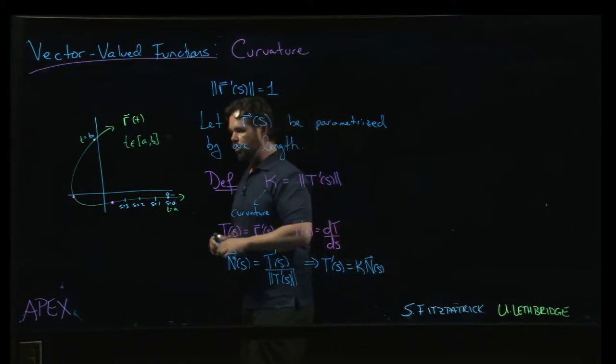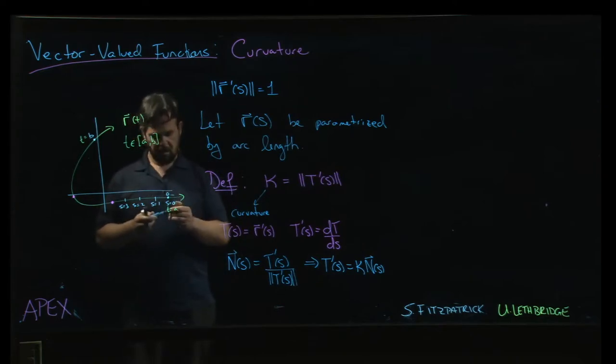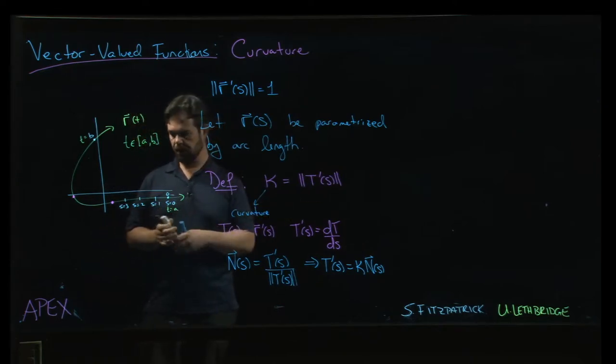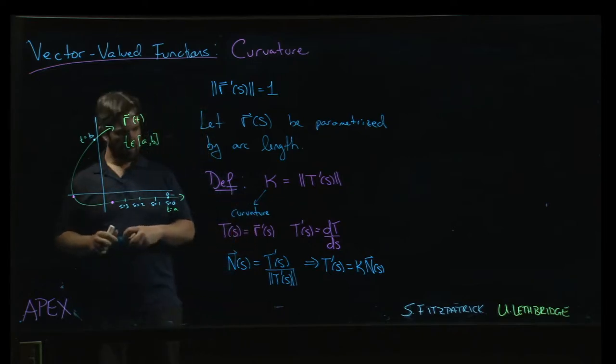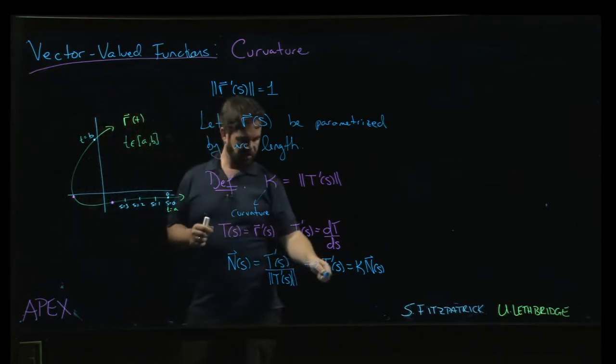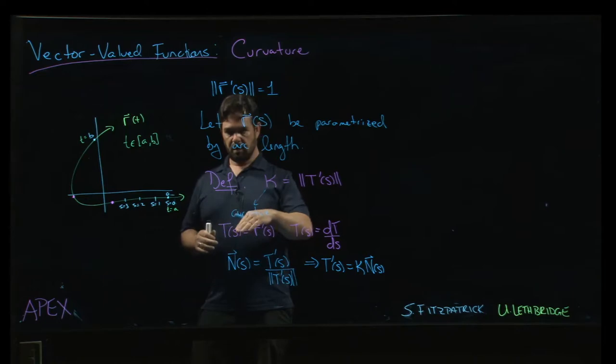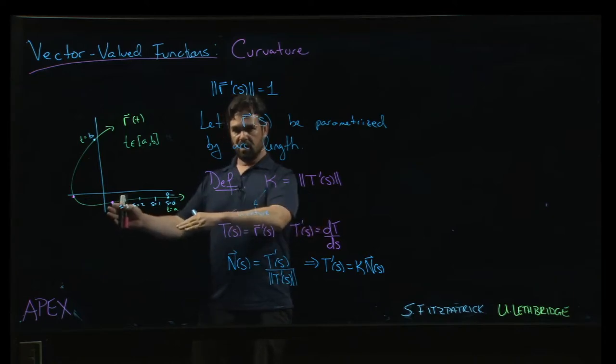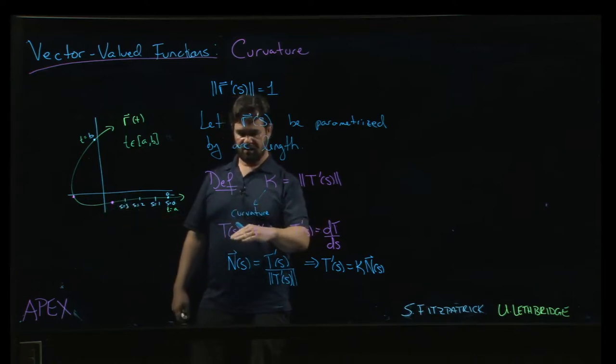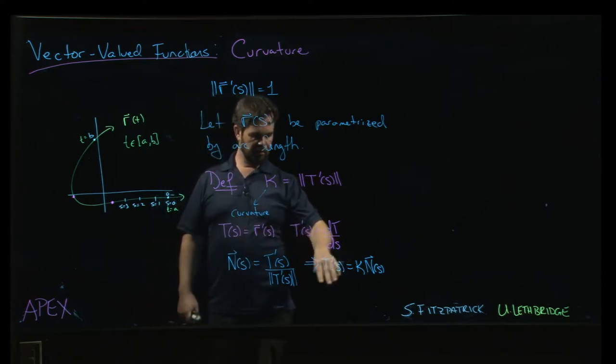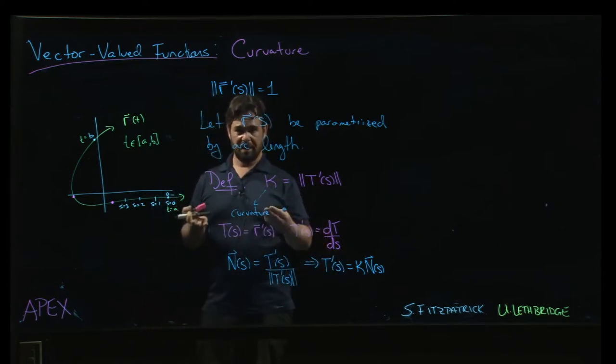We did talk about this a little bit before—this idea that T prime is how the unit normal vector is changing. T of s is the direction of the curve. If T prime is small in magnitude, that means the direction is not changing very much. If the direction isn't changing very much, you're moving in approximately a straight line.